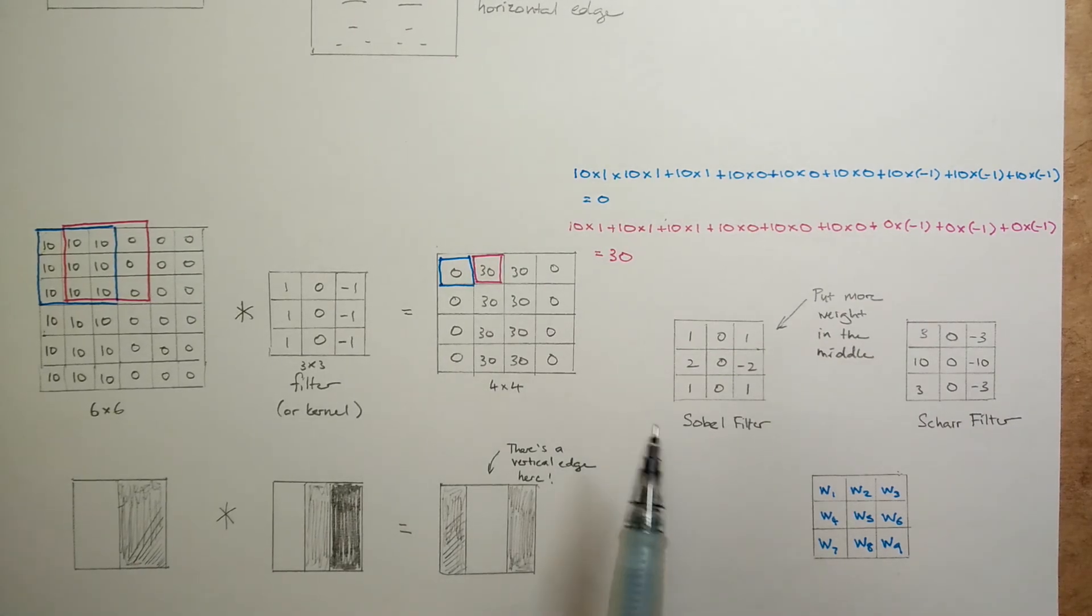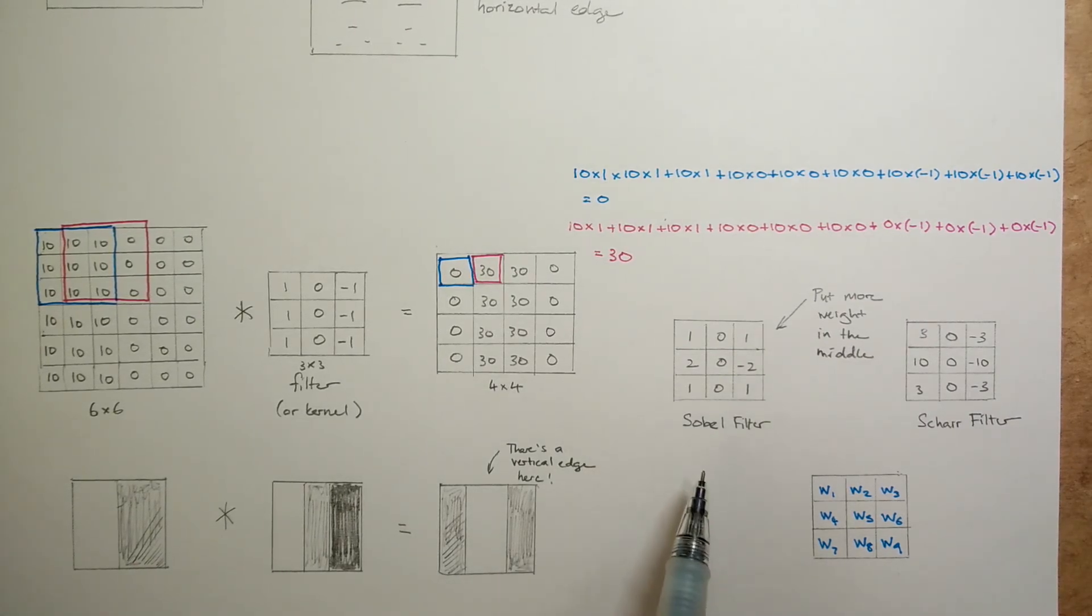US computer vision scientists have developed and handcrafted other kinds of edge detectors like Sobel filters and Scharr filters that are better at capturing vertical lines. In fact, these filters can be flipped 90 degrees or 45 degrees to capture horizontal and diagonal lines as well.